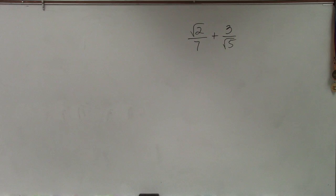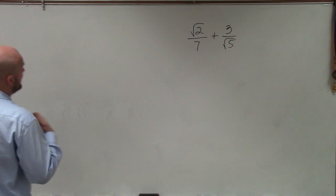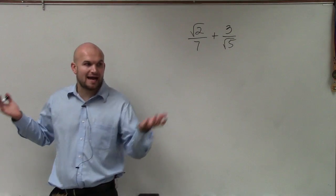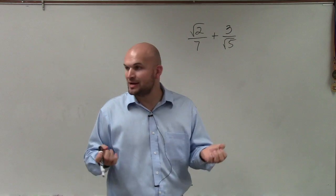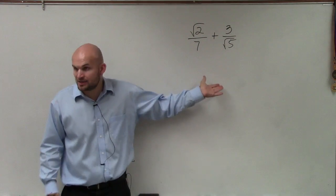So here I have √2/7 + 3/√5. We have two fractions. To add or subtract two fractions, we have to have common denominators. These do not have common denominators.